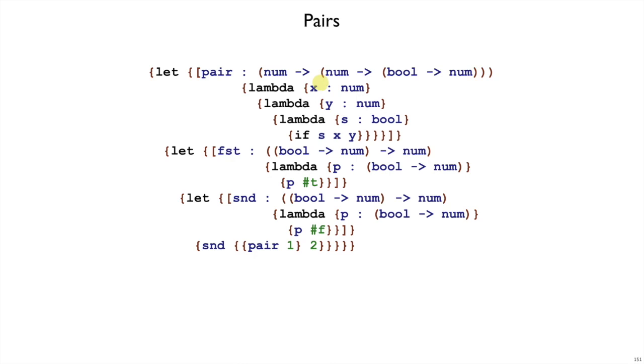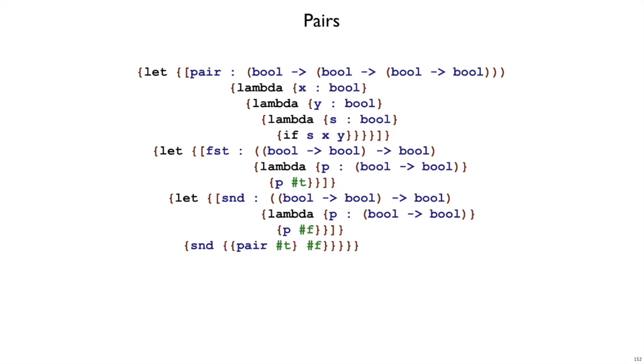Similarly here we take a number to give back a function that wants a number to give back a function that gives you this pair represented as a boolean to num function. That matches up, boolean to num and these two nums. Here I'm using pairs of two numbers. It all works out if I have pairs of two booleans. You can work through the details here and make sure all the types work out although everything is turned into booleans.